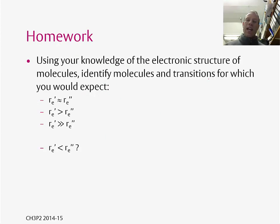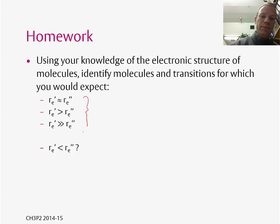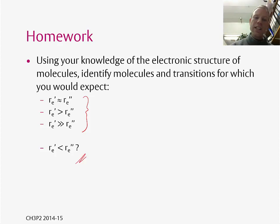So having said that, you should now be able to use your knowledge of the electronic structure of molecules — examples like O₂, NO, and HCl — to suggest some molecules and transitions for which you would expect these various cases. That is, cases where the equilibrium bond length in the excited electronic state is more or less equal to, larger than, or significantly larger than the bond length in the ground electronic state, and to predict what the absorption spectrum would look like in each case.